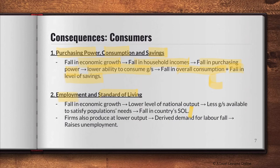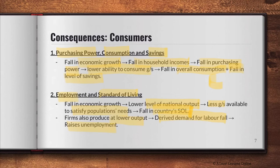Importantly, do not link this back to 'hence a fall in AD, hence a fall in economic growth' — that goes in a full circle. A fall in economic growth means a lower level of national output, so there are fewer goods and services available to satisfy consumer needs, hence a fall in material standard of living. Also, firms produce at lower outputs, so derived demand for labor falls — this causes a rise in unemployment. It is fine to link undesirable growth to another macroeconomic goal.